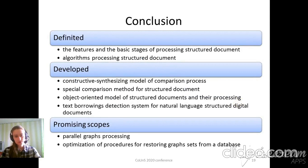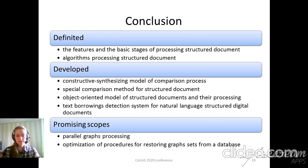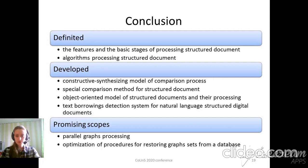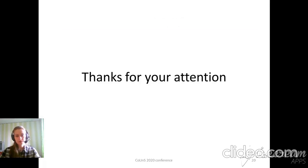In conclusion of our research: we defined the features and the basic stages of processing structure documents. Some algorithms were defined for processing structure documents. We developed special models and methods for comparison of documents. We defined the relationship between object-oriented, constructional, and design models. We developed software tools for comparison of structure and natural language documents. Promising future scopes include paragraph processing and optimization of procedures for restoring graph sets from databases, needed to decrease the time of restoring from the database. Thanks for your attention.